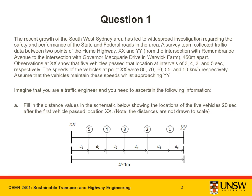Observations at XX show that 5 vehicles passed that location at intervals of 3, 4, 3 and 5 seconds respectively.